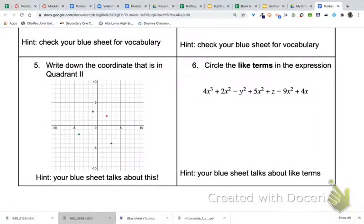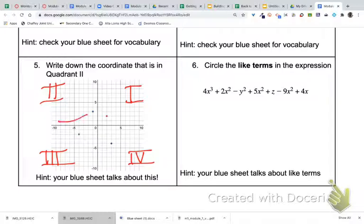For numbers five and six, number five—again on your blue sheet you should see quadrant one is in the top right, quadrant two top left, quadrant three bottom left, quadrant four bottom right. So we're trying to identify and write down the coordinate that is in quadrant two. You can see here we've got our point there in quadrant two.